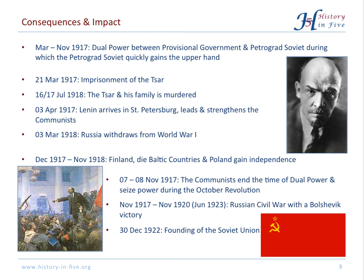In April 1917, Lenin arrived in St. Petersburg and strengthened the communists. In March 1918, Russia withdrew from World War I. One consequence of the February Revolution was the independence of Finland, the Baltic countries, and Poland. However, you also have to consider the October Revolution, where the communists ended the period of dual power and seized power in Russia. There was still the Russian Civil War from 1917 to 1922 or 1923, and in the end there was the founding of the Soviet Union on the 30th of December 1922.